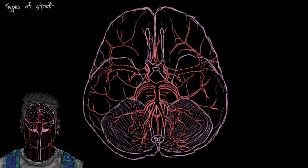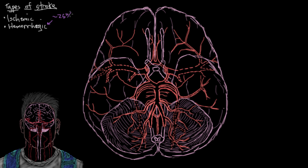There are two main types of stroke: ischemic stroke and hemorrhagic stroke. In this video we'll cover hemorrhagic strokes, which account for approximately 25% of all strokes.